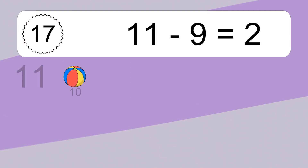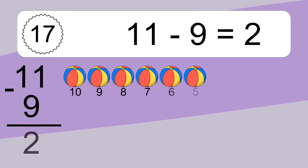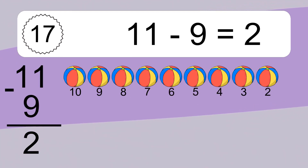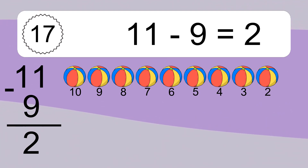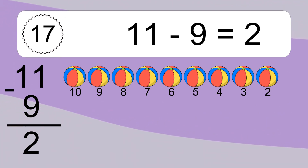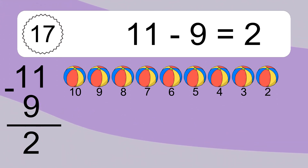11 minus 9 equals what? 11 minus 9 equals 2. Let's count it: 10, 9, 8, 7, 6, 5, 4, 3, 2.